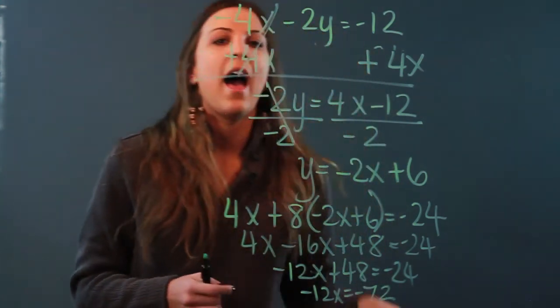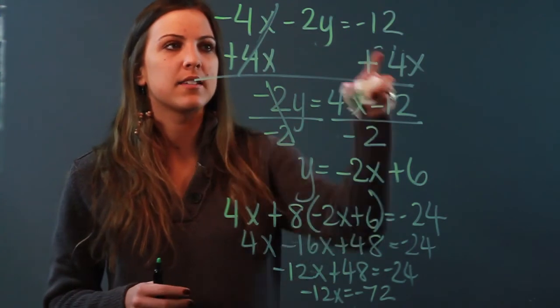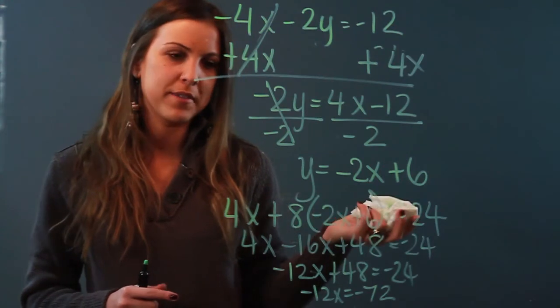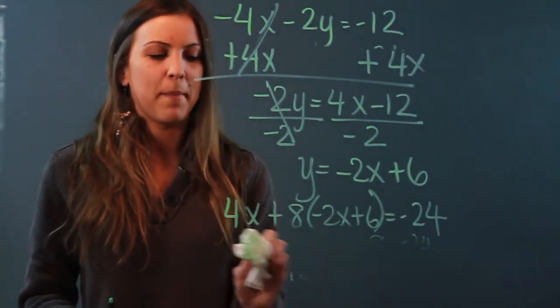All right so I can do this problem by substitution. Once I get x equals positive 6 I can substitute it in to get y. But it took me all this work while the elimination only took me about 5 seconds. So those are the cons to solving a system by substitution.